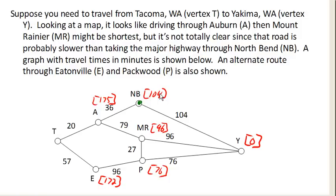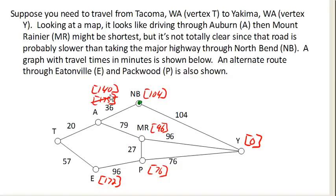Working backwards from the next vertex, this distance is 104 and this time is 36. So 36 plus 104 — that's 104 minutes here and 36 minutes there — is a total of 140. And 140 is shorter than 175, so we're going to replace that 175 with 140, because that was a shorter path and we're looking for the shortest path.